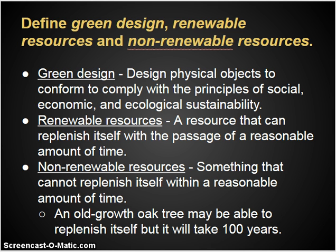Renewable resources are resources that replenish themselves within a reasonable amount of time. According to the US government, that reasonable amount of time is within 20 years. So bamboo, for example, is renewable because it grows faster than 20 years, whereas oak takes 30 to 50 years to become harvestable, so oak would not be a renewable resource even though it does grow. Non-renewable resources are things that cannot replenish themselves within a reasonable amount of time — an old-growth oak tree can replenish itself, but it takes a hundred years.